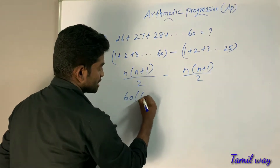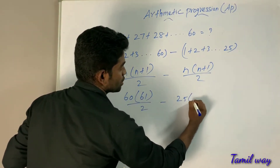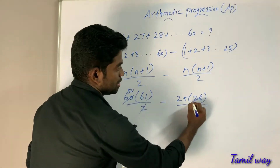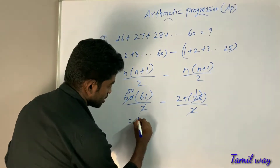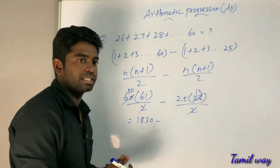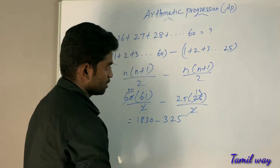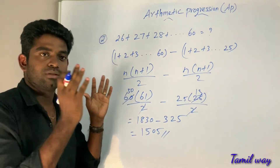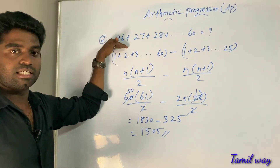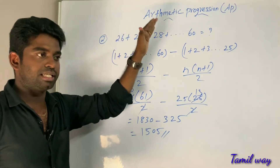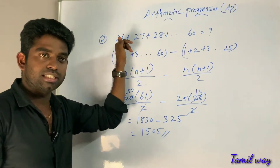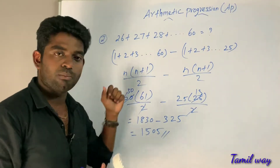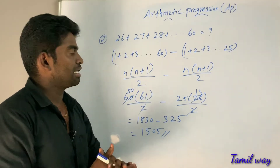60 into 61 divided by 2, minus 25 into 26 divided by 2. Cancel the 2s: 30 into 61 equals 1830, minus 25 into 13 equals 325. So 1830 minus 325 equals 1505.